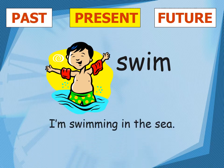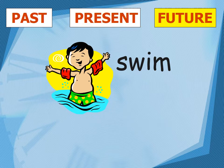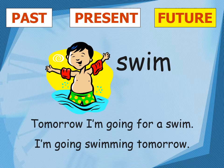'I am swimming in the sea' is a perfect example of using the present tense. For future tense: 'Tomorrow I am going for a swim,' 'I am going to swim tomorrow,' or 'I will be swimming tomorrow.' These are the simple expressions in future tense for the verb 'swim.'